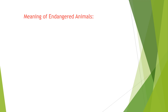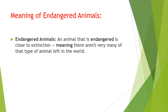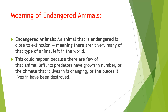Let us try to understand the meaning of endangered animals. An animal that is endangered is close to extinction, meaning there are not very many of that type of animal left in the world. This could happen because there are few of that animal left, its predators have grown in number — predators can be more powerful animals or human beings — or the climate it lives in has changed, or the places it lives in have been destroyed. That is why we call them endangered animals.